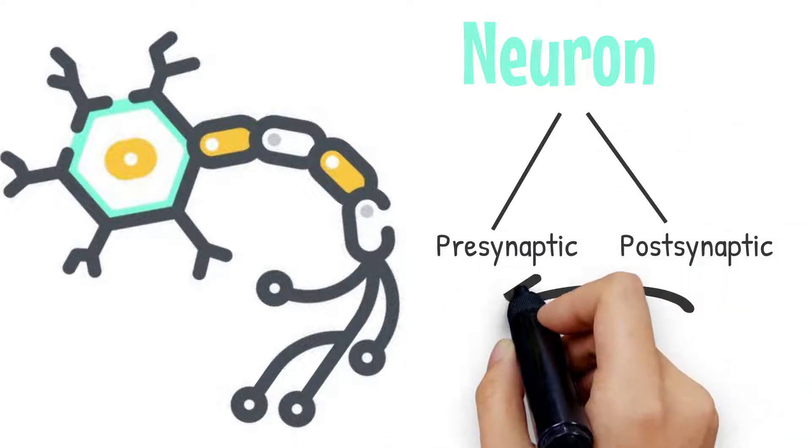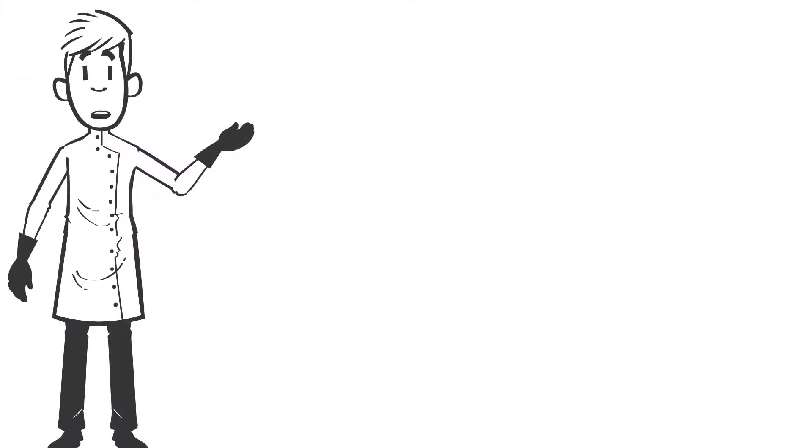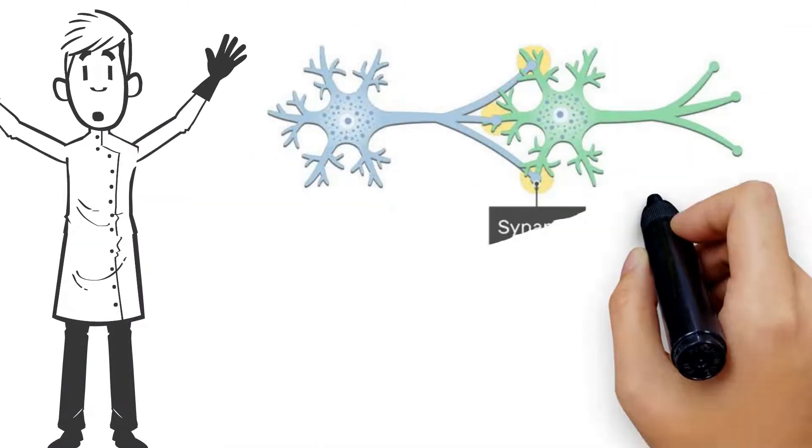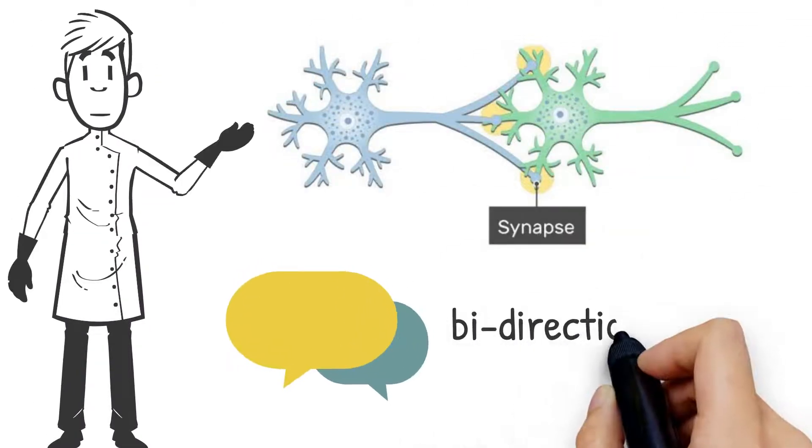That is, it can send or receive neurotransmitters respectively. So it can be said that chemical synapses have the ability to communicate bi-directionally.